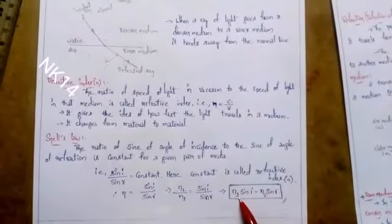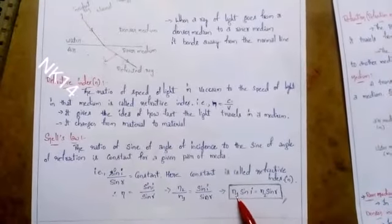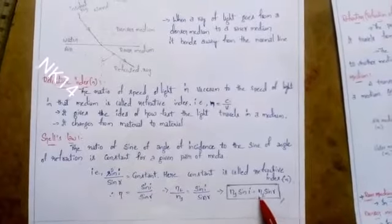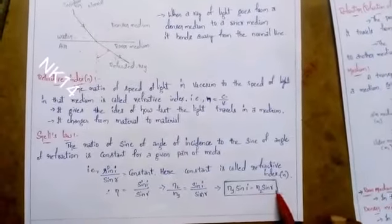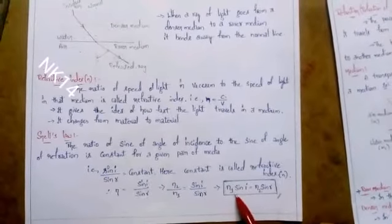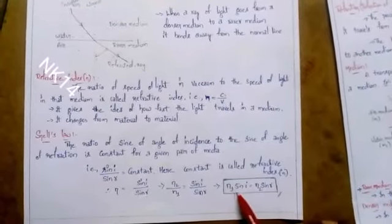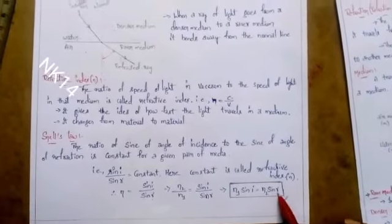Finally, Snell's law can be written as: n₁ sin i = n₂ sin r, where n₁ is the refractive index of medium 1 and n₂ is the refractive index of medium 2.